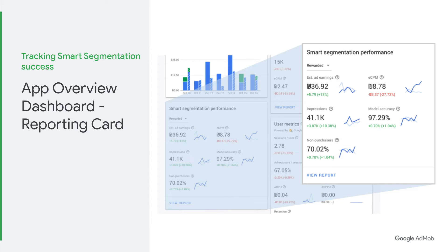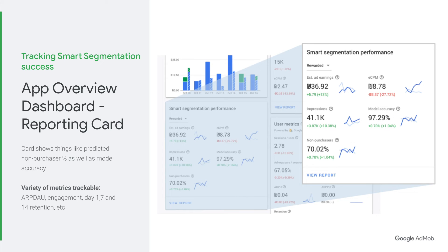Now that you've heard how Smart Segmentation works, you may be ready to get started with Smart Segmentation units. But you might also be wondering: how do I measure if they actually work for my app? In AdMob, tracking the success of Smart Segmentation is easy. When a Smart Segmentation ad unit is created, AdMob automatically generates a reporting card in the AdMob app overview dashboard that allows you to track a variety of metrics. This includes ARPDAU, engagement, Day 1, 7, and 14 retention, and more. This is known as the reporting card.